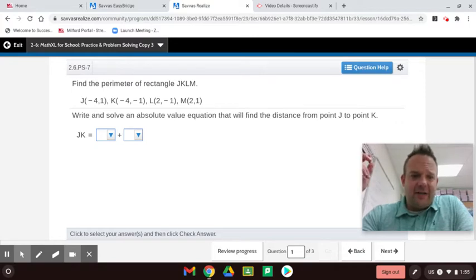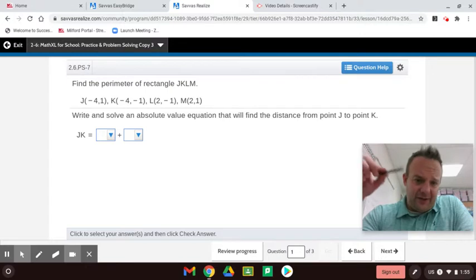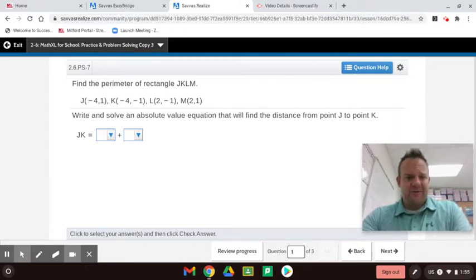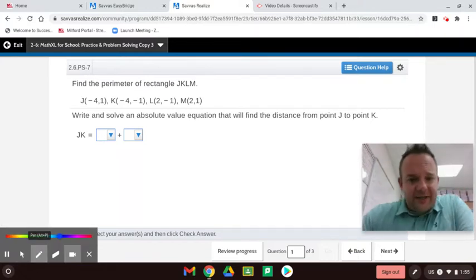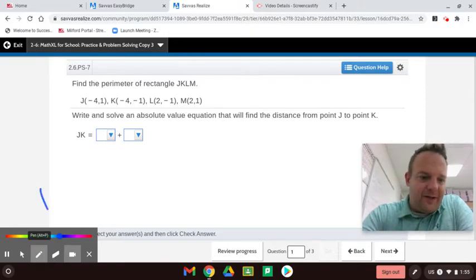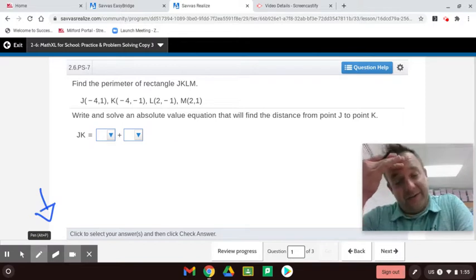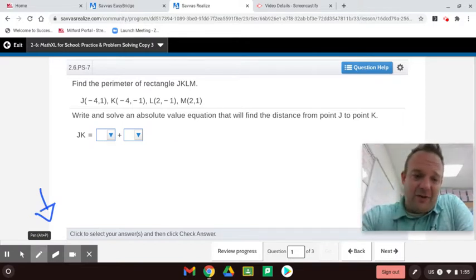Find the perimeter of rectangle JKLM. You can see the coordinates there of my J, K, L, M. I know yours might be different. Here we go. Write and solve an absolute value equation that will find the distance. Now, one thing you can't see, probably, down here, there are a lot of parts to this. And stick with me.